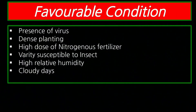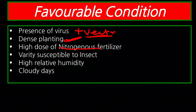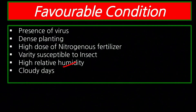अब देखते हैं favorable conditions — presence of virus plus vector (whitefly) दोनों present हों तो disease आएगी। Dense planting — recommended spacing से कम spacing में लगाने पर ज्यादा disease आती है। High dose of nitrogenous fertilizer — ज्यादा nitrogen से disease resistance कम हो जाती है। Susceptible variety, high relative humidity और cloudy days में insect population बढ़ता है और disease ज्यादा आती है।